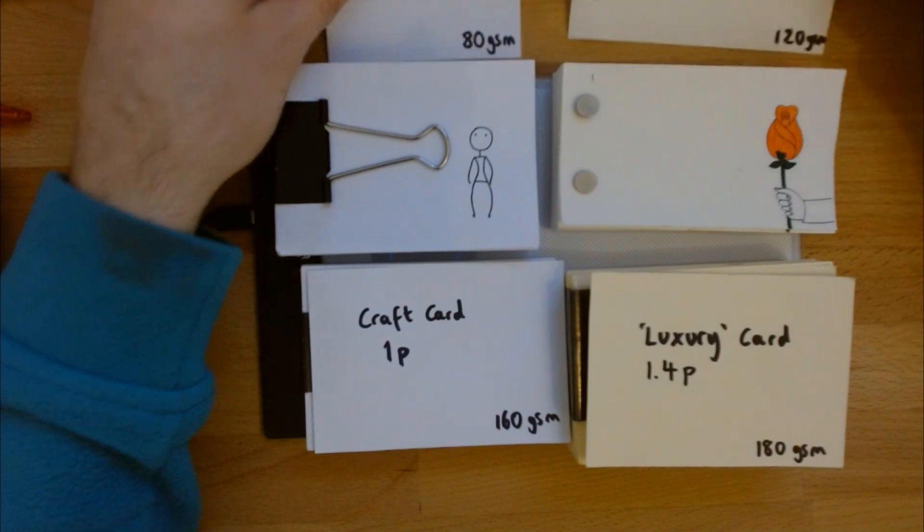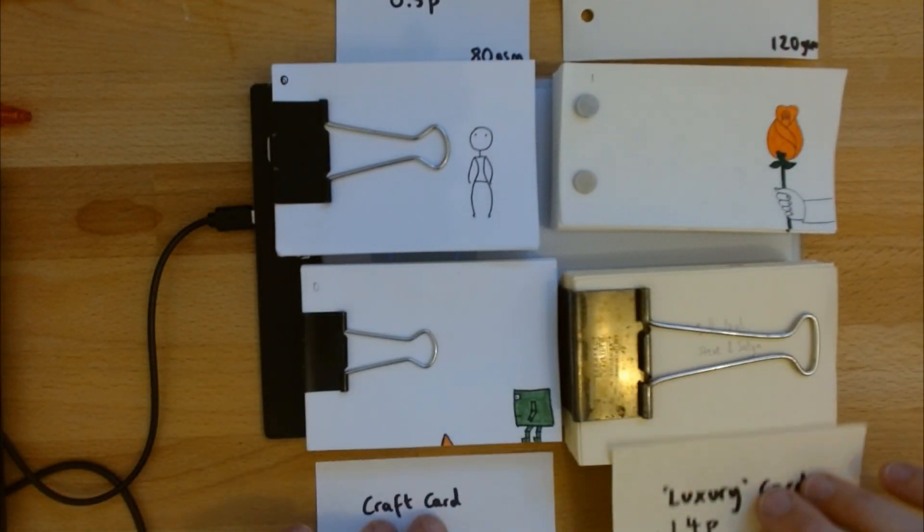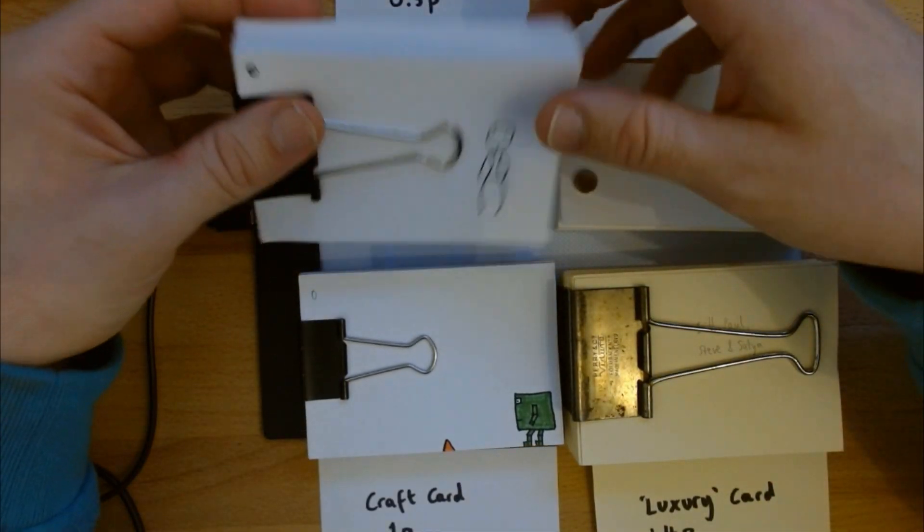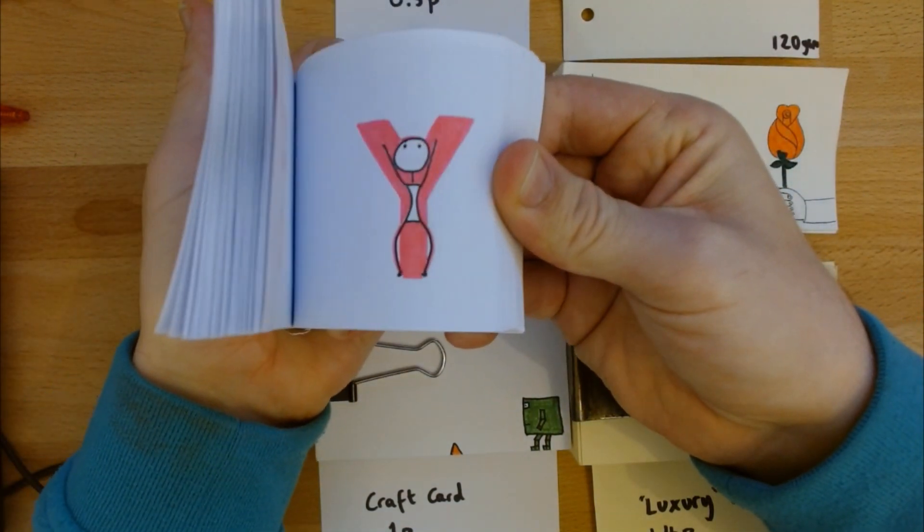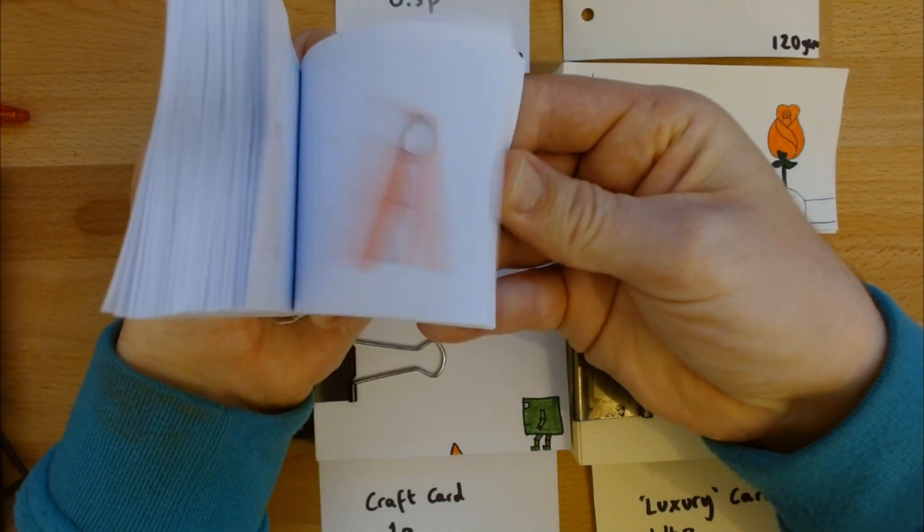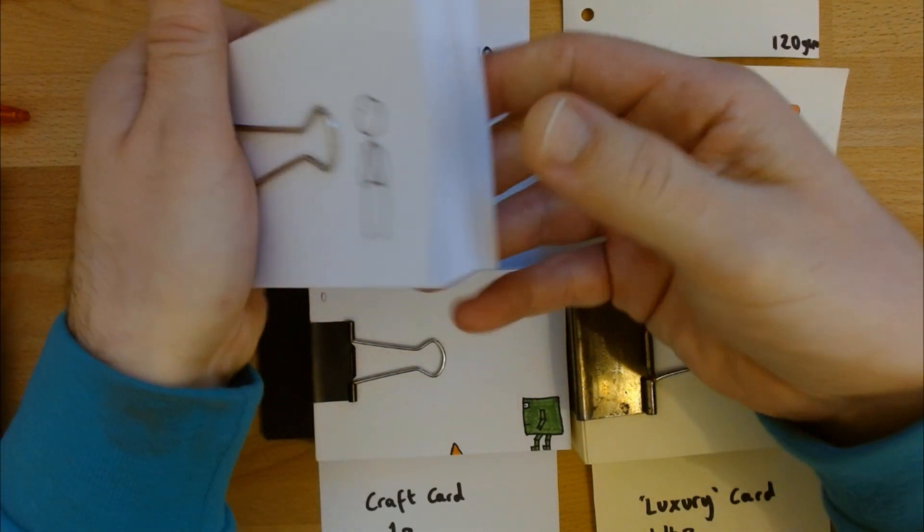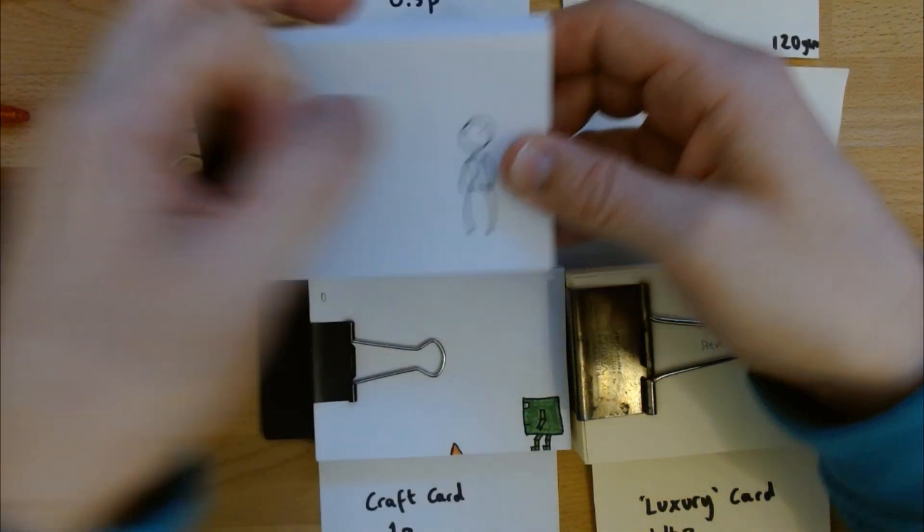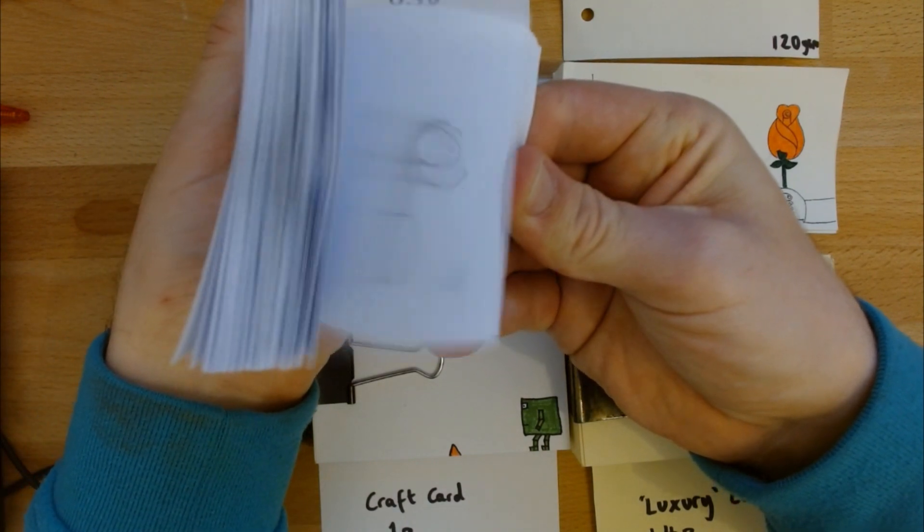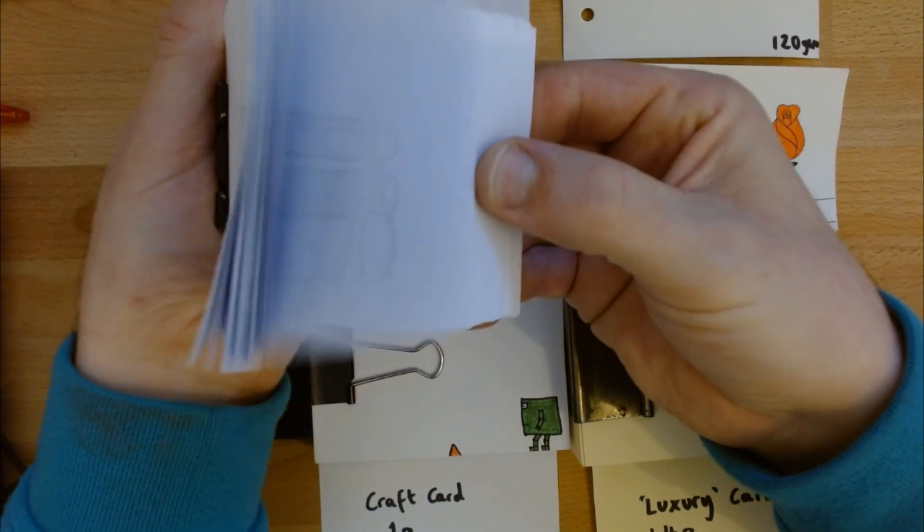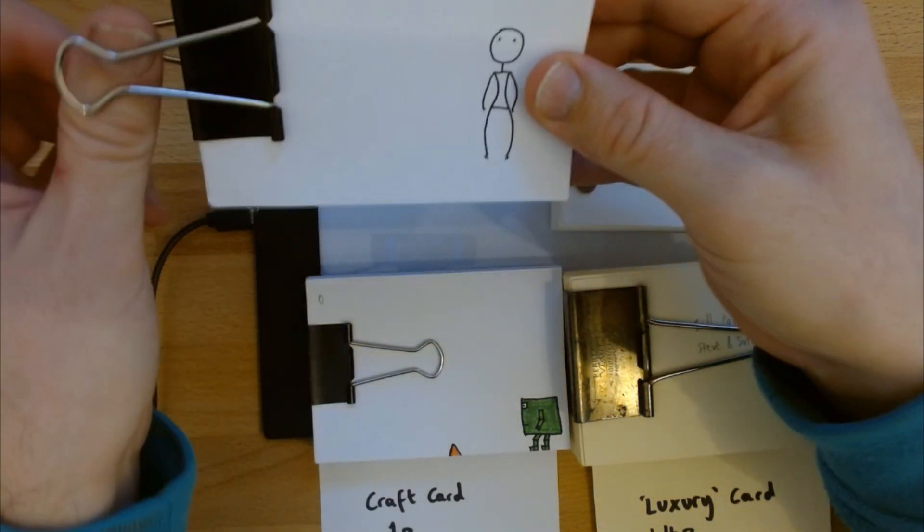Now the second thing I want to talk about is the actual flip itself. So this is the printer paper, which is the cheapest. You can see it skips a little bit, it's a little bit blurry, because the pages are so thin.